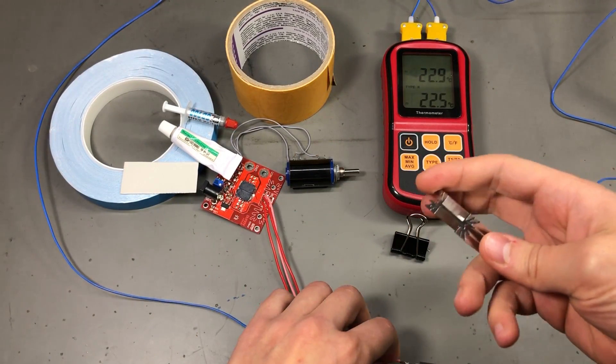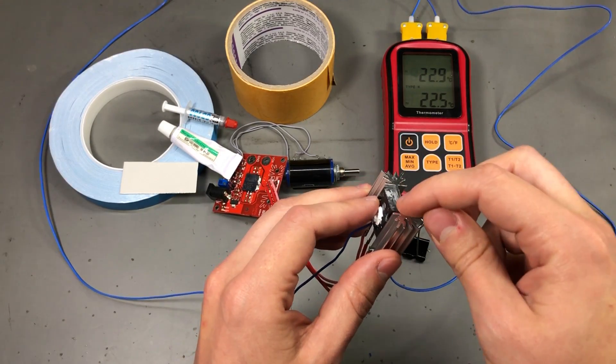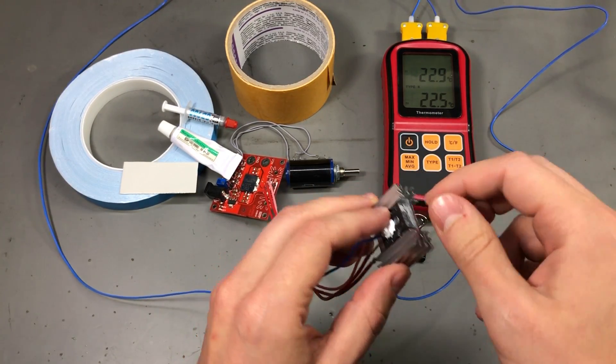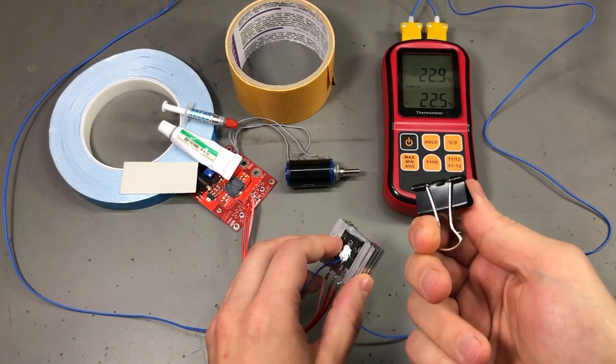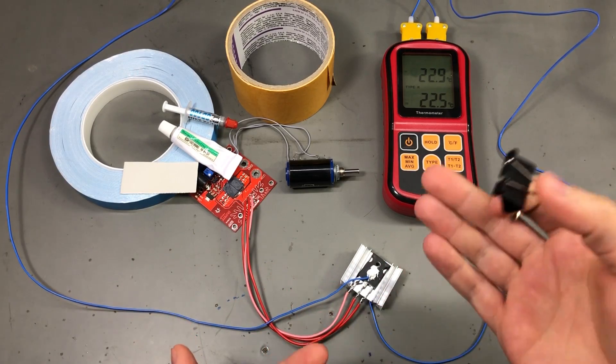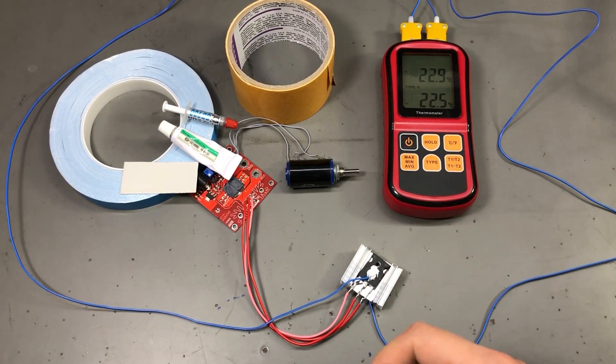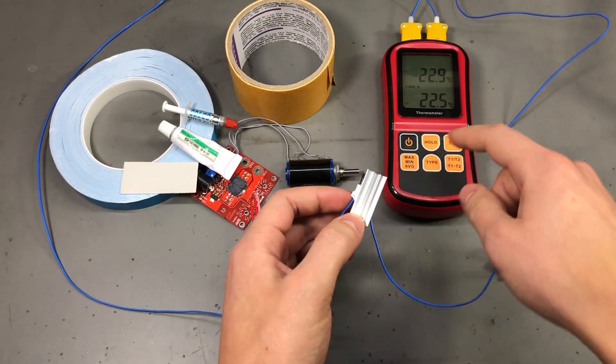And then what I'm going to do is connect the two devices using the thermally conductive material that we're testing in between them. I'm going to be using this clamp to hold them together. Hopefully this will provide the same pressure each time we test this, and then we're going to be measuring how fast the heat sink gets approximately to the same temperature as our transistor.